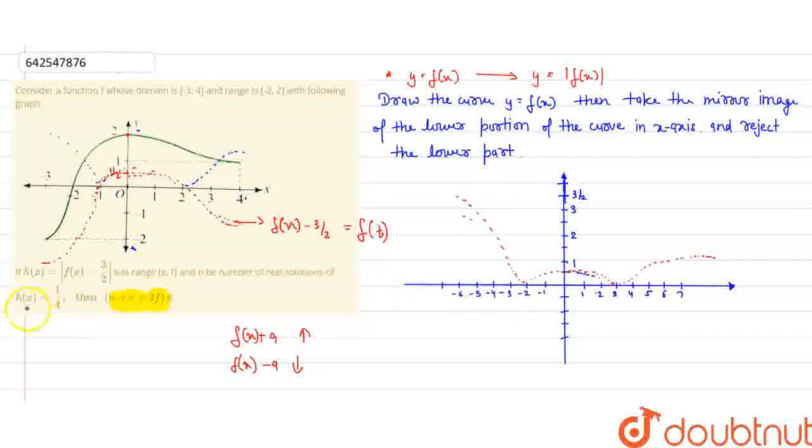Now, we have a graph of h(x) equals 1/4. When h(x) equals 1/4, that means it is a constant function. So my function will go in this format like this. This is my h(x), h(x) equals 1/4. It is a constant term.